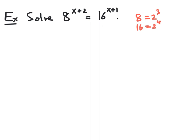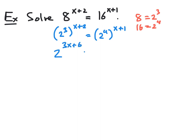To do that, we're going to replace the 8 on the left side with 2 cubed, giving us 2 cubed raised to the x plus 2 power. And we're going to replace the 16 on the right side with 2 to the 4th power, raised to the x plus 1 power. Now on each side we have 2 raised to a power raised to another power, and by a property of exponents, when we raise a power to another power we can multiply those powers together. So on the left we have 2 to the 3 times x plus 2, which is 3x plus 6 when we distribute the 3. And on the right we have 2 to the 4 times x plus 1, which is 4x plus 4 when we distribute.